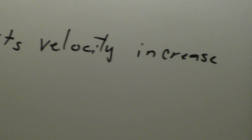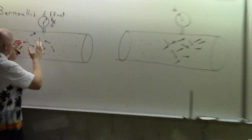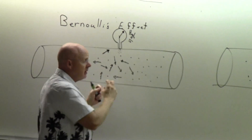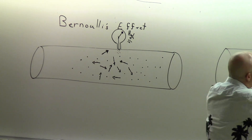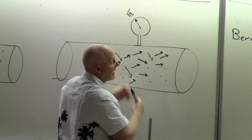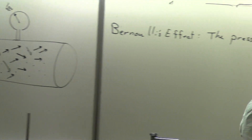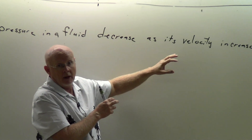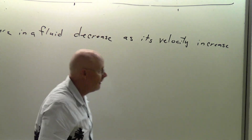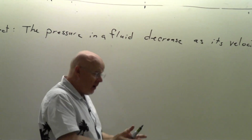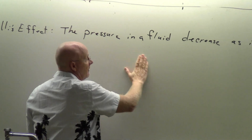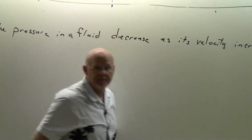I'll say it again: if the fluid is not flowing, the molecules are moving in very random directions — left, right, up, down — and a lot of them are moving up. But once you get them to move, they don't go up as much anymore. They still go up some, so the pressure doesn't go to zero, but the pressure does go down. The faster you make the fluid go, the more the molecules move through the pipe, and as they move through that pipe they're not moving upward or downward toward the walls. So we say the pressure in the fluid decreases as its velocity increases. That's the Bernoulli effect, and it has some very interesting consequences.